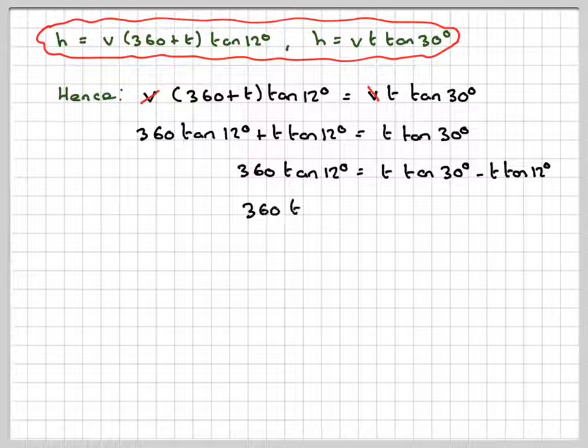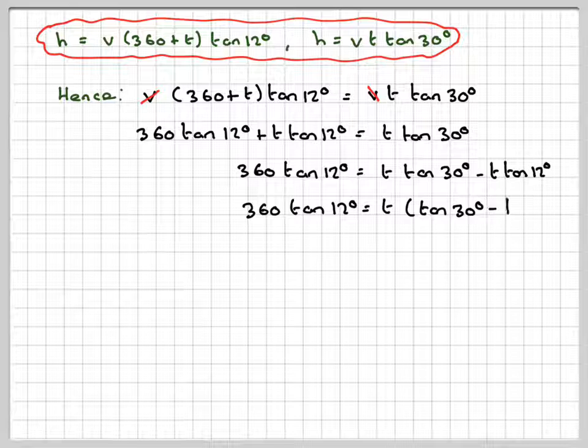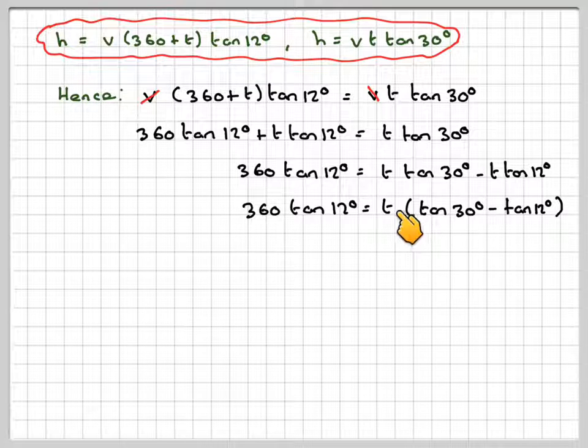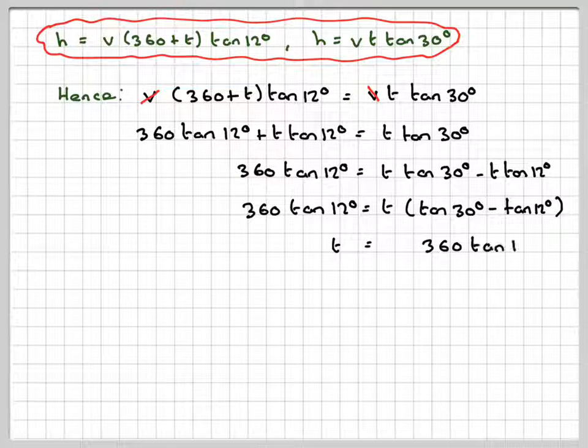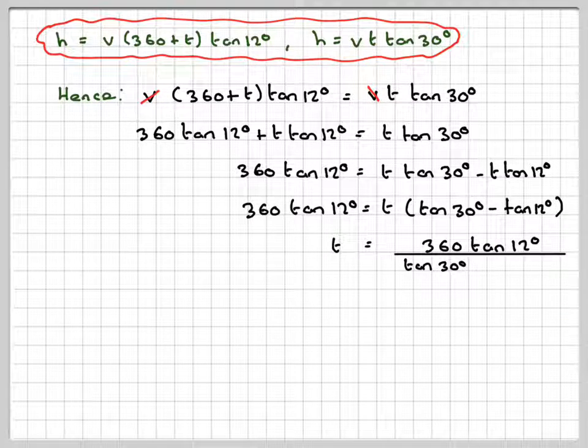Factorize the right hand side, so we're going to get t(tan 30° minus tan 12°). Making t the subject, we get 360 tan 12° divided by (tan 30° minus tan 12°).